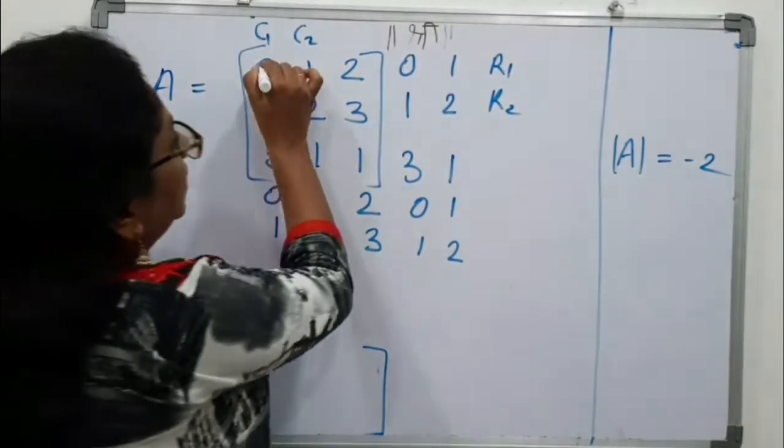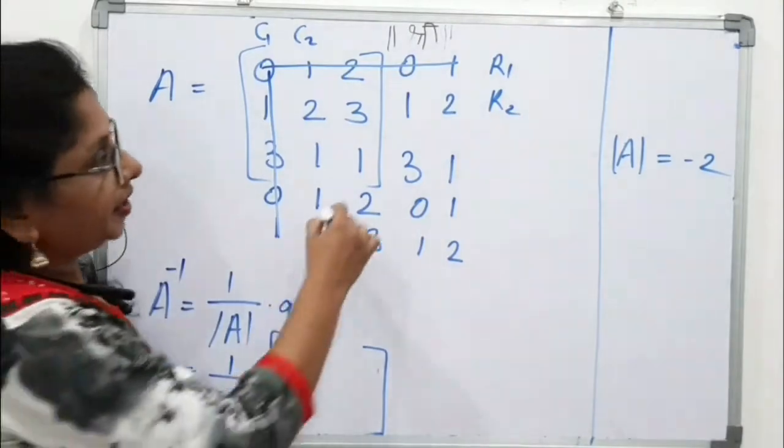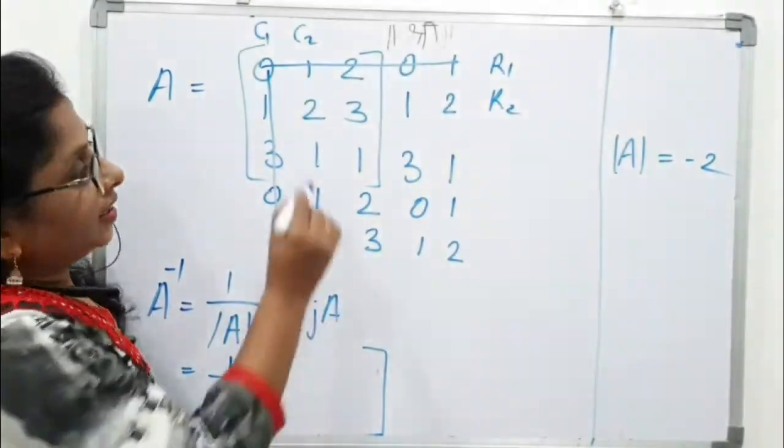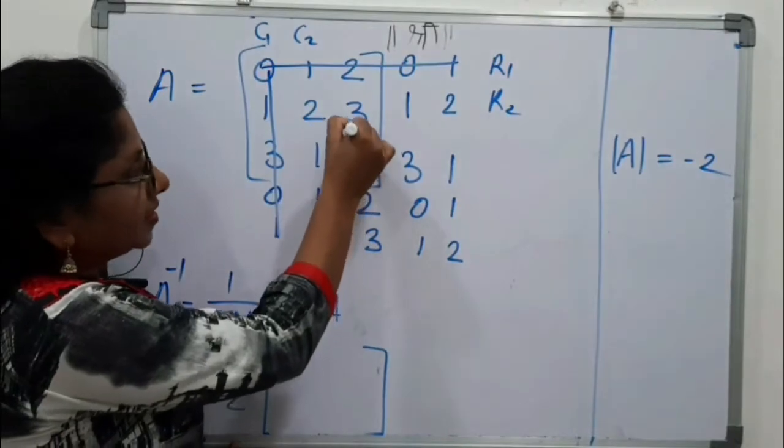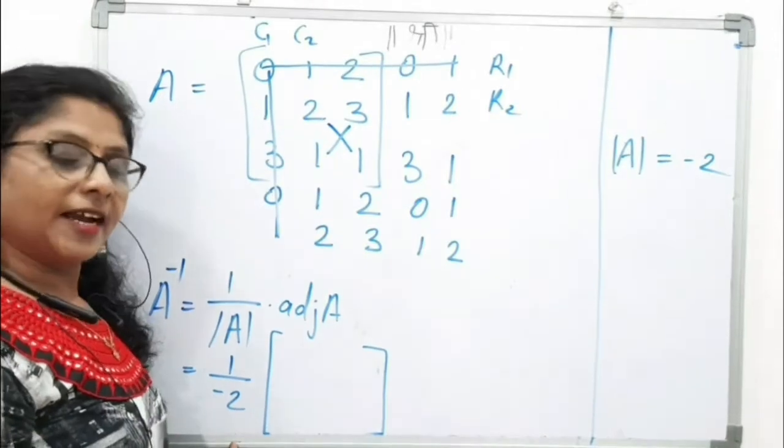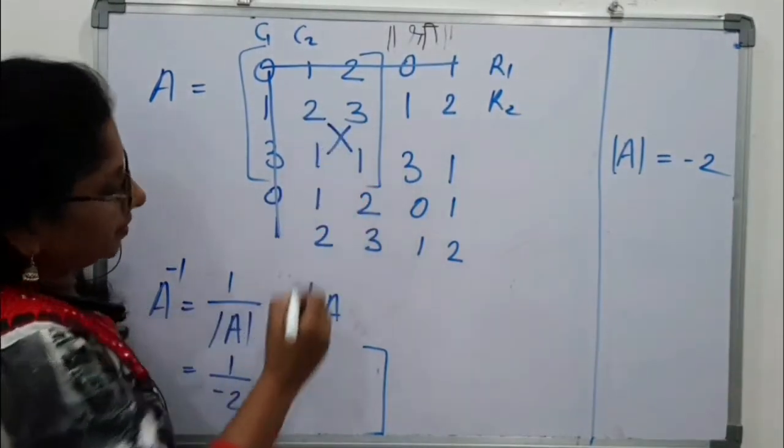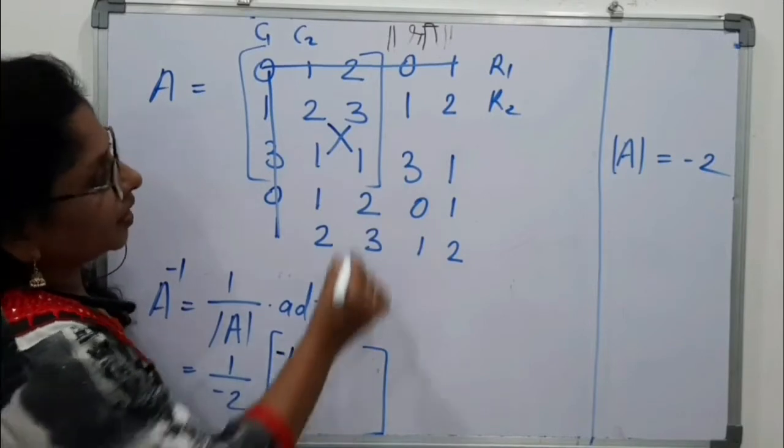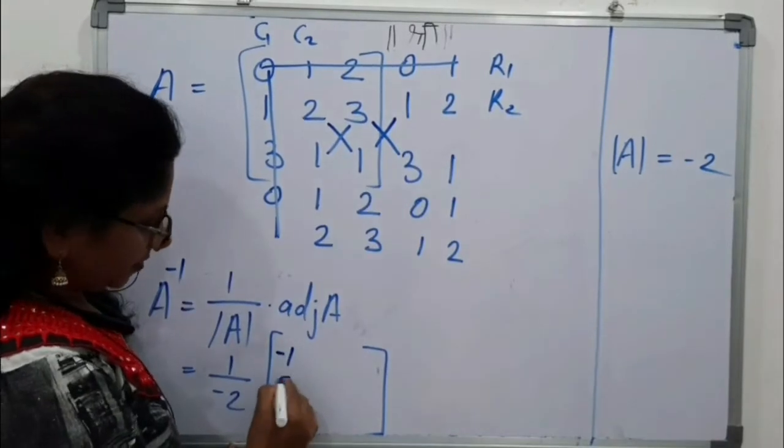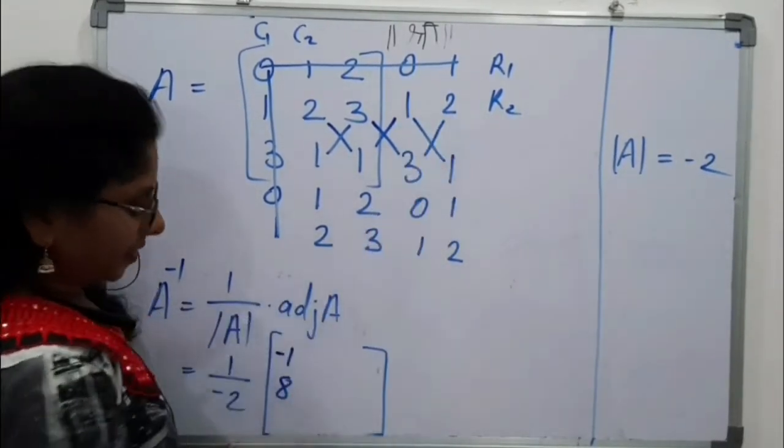We will delete this first row and first column. Remaining 4 by 4 matrix. Now multiply these elements in cross. As we solve determinant in that fashion only. So, 2 minus 3, that is minus 1. Then 3 into 3, 9 minus 1, that is plus 8. Then 1 minus 6, that is minus 5.